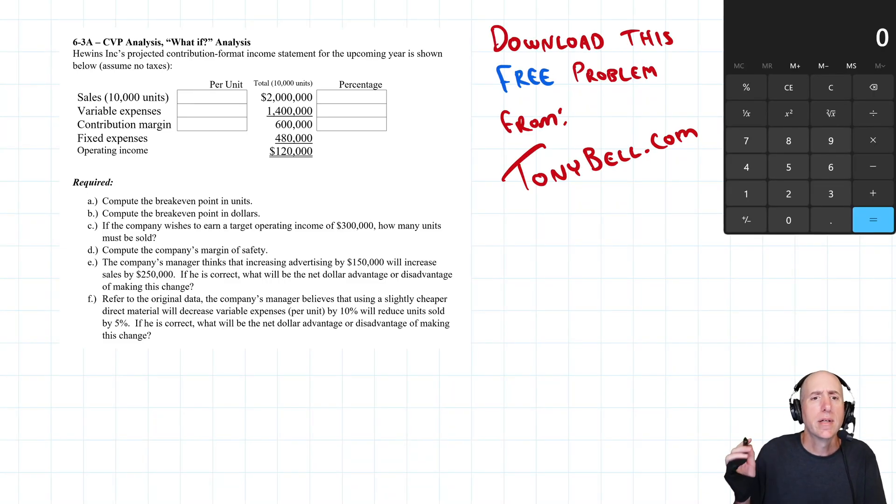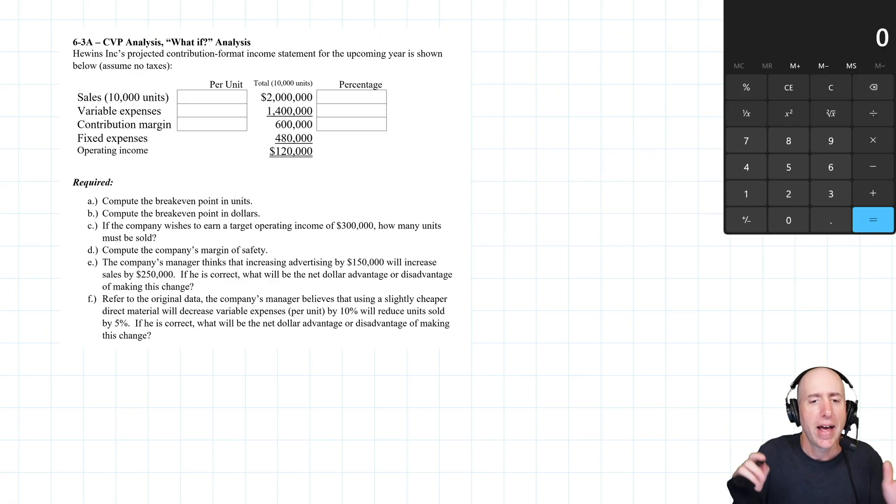Let's examine problem 6.3, a CVP analysis with some what if analysis. Because we've broken our costs into variable and fixed components, it enables us to test things out. That's what we'll be doing in this problem, after we do some breakeven calculations.